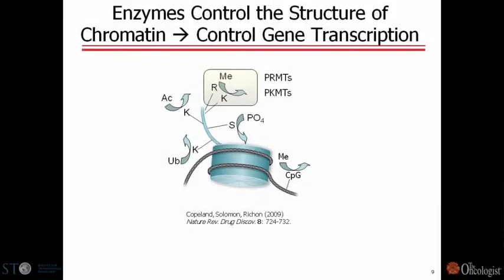Those post-translational modifications include a variety of different covalent bond formations, all catalyzed by different classes of enzymes. The enzymes that remove acetyl groups, the HDACs, are well known to this audience, but there are other enzymes that put acetyl groups on lysines, ubiquitinate lysines, phosphorylate serines. What we are focused on at Epizyme are the enzymes that perform methylation at specific arginine or lysine residues, referred to as protein or histone arginine methyltransferases or lysine methyltransferases—collectively the histone methyltransferases, or HMTs.